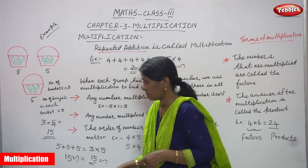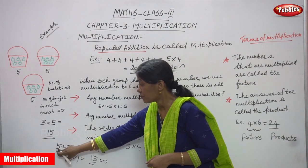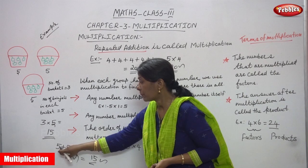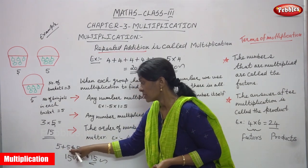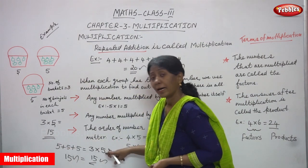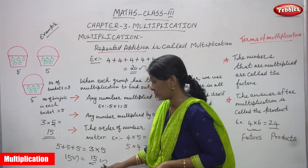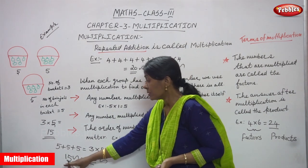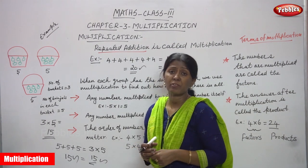Otherwise, we can do the repeated addition method: 5 plus 5 plus 5. Because 5 is the number of brinjals — in each basket, 5 brinjals are there: 1st basket, 2nd basket, 3rd basket. So 5 plus 5 plus 5. 5 plus 5 is 10, 10 plus 5 is 15. So 15 brinjals. You can do repeated addition or multiplication — 3 into 5 is 15. Both are same: 15 equals 15. Total number of brinjals is 15.